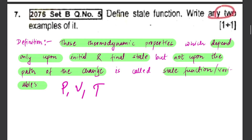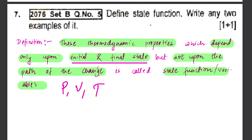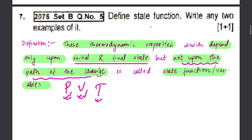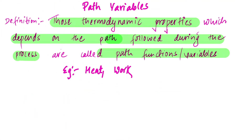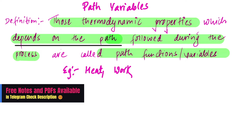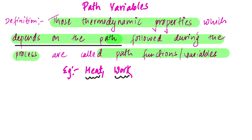Now we will define the state function. The state function depends only on the initial or final state. Examples of state functions are pressure, volume, and temperature. But path functions depend on the path taken. The thermodynamic path variable depends on the path, not just the initial or final state. A main example of a path variable is heat — it depends on the path.